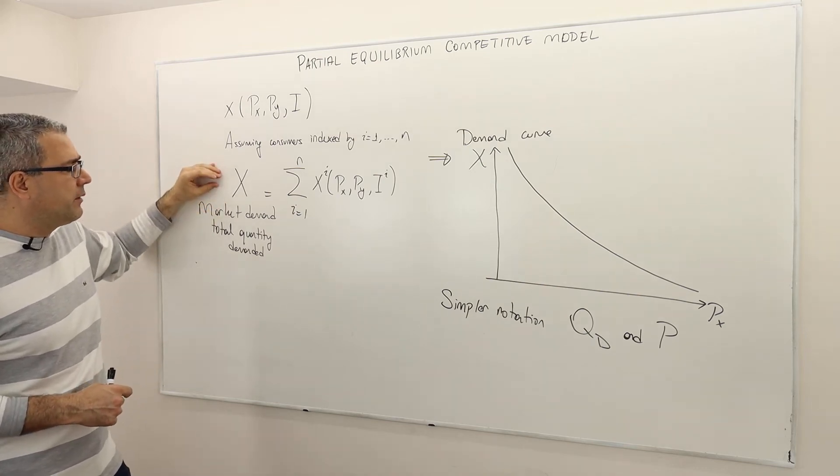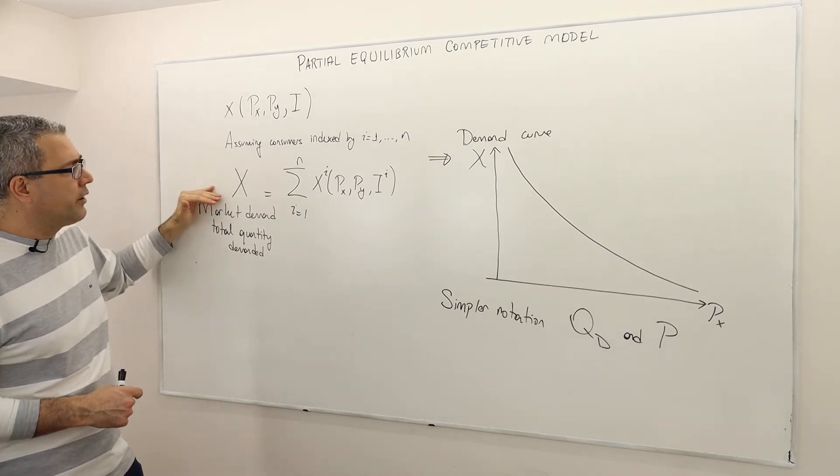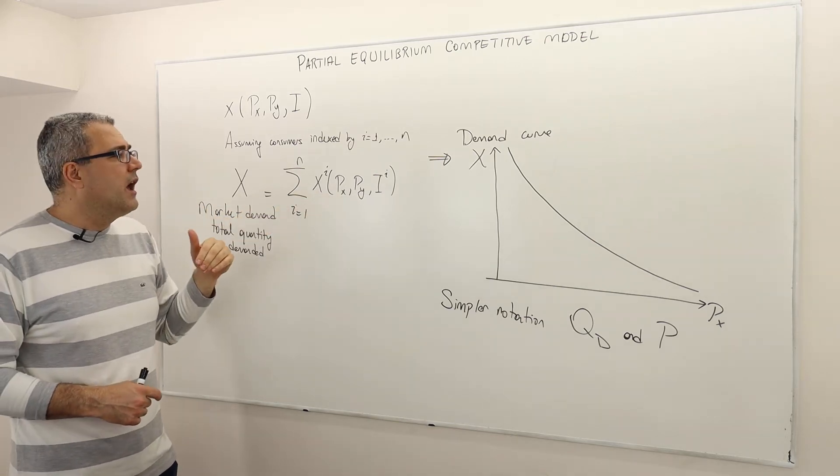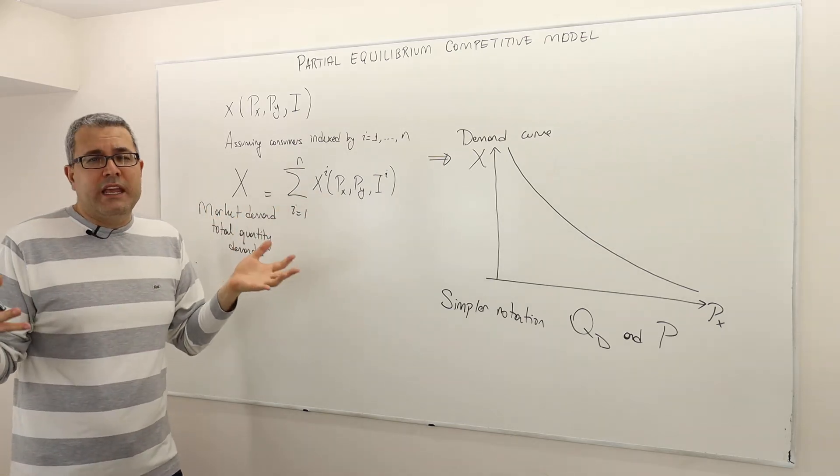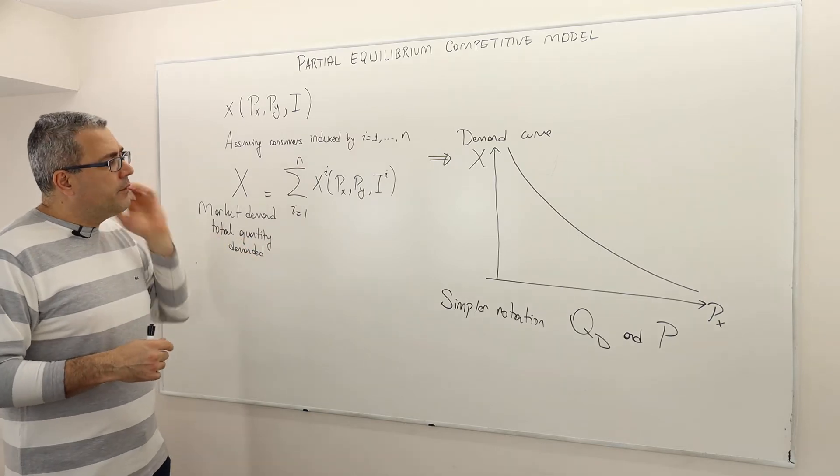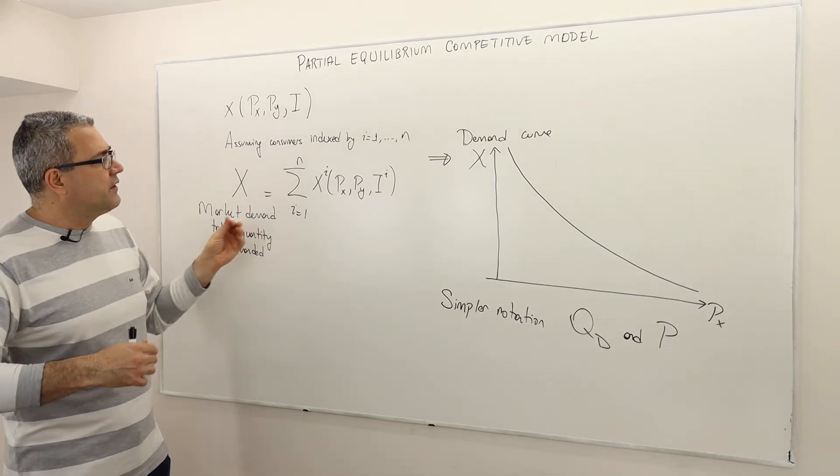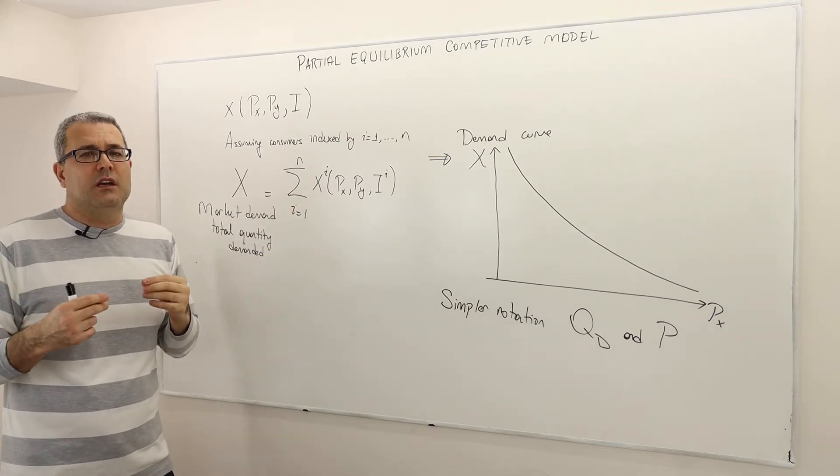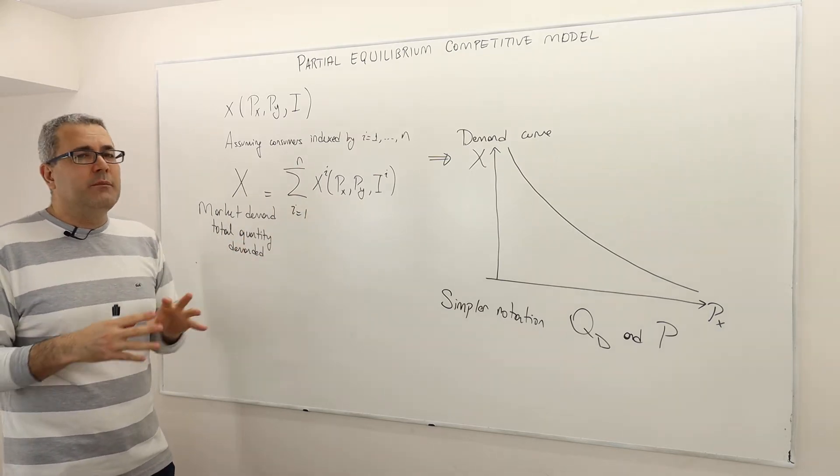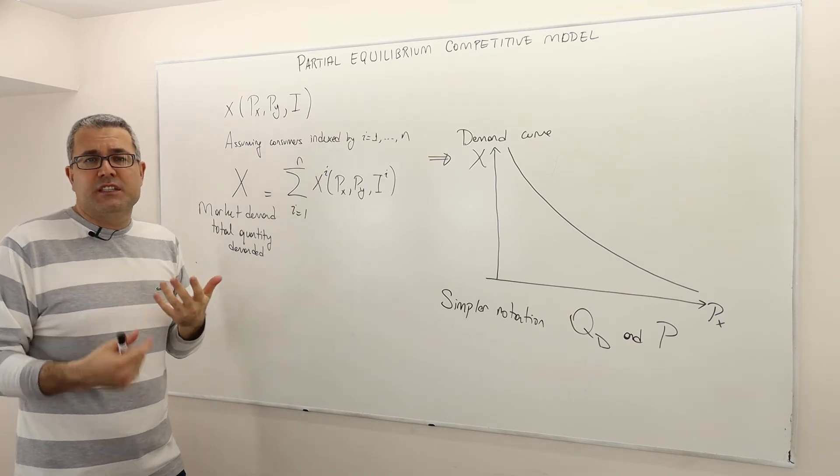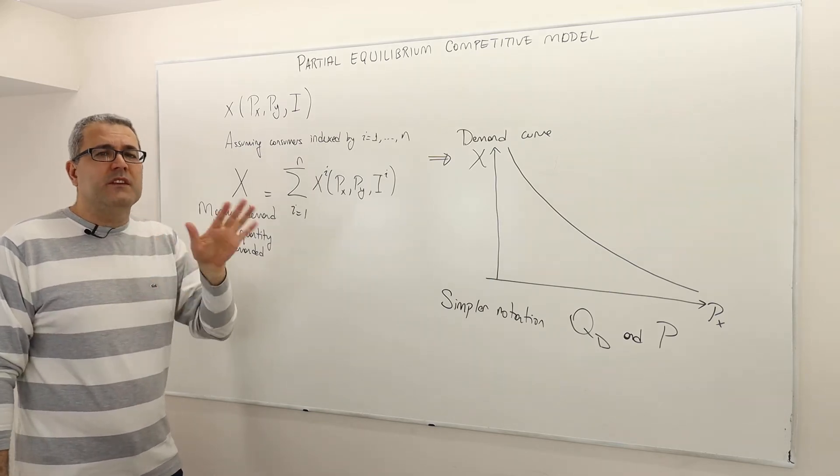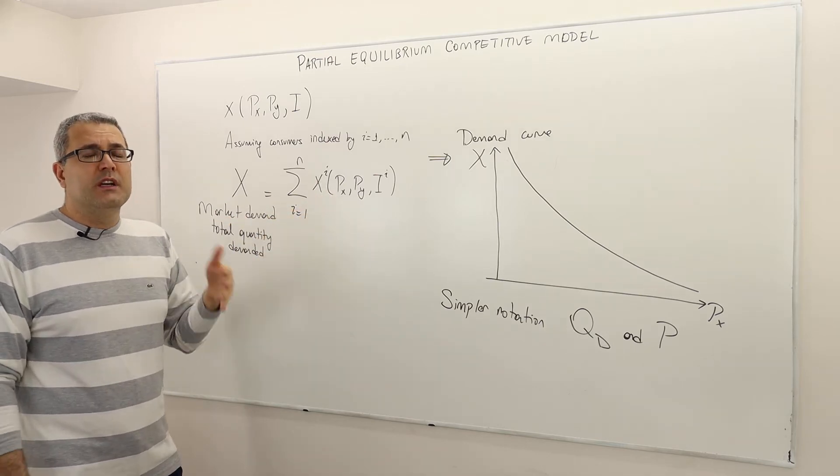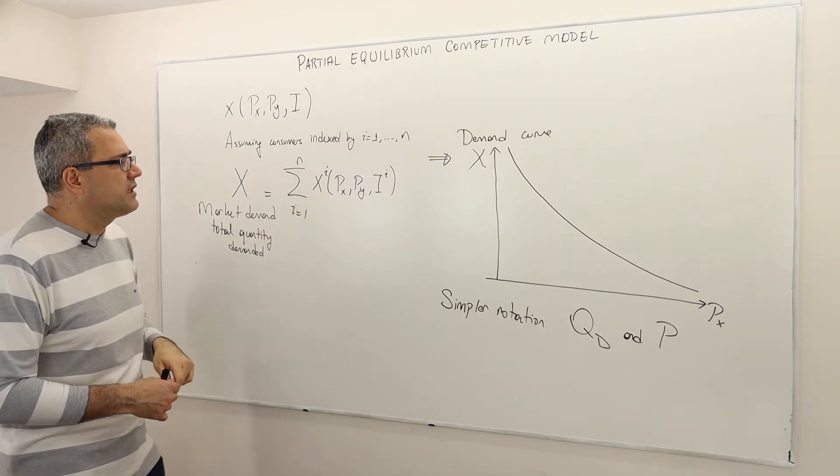This aggregate demand or the market demand for good X also depends on the price of good X, price of good Y, and the total income. Here, one assumption is that each individual is facing the same prices, meaning negotiation is not allowed, or we basically ignore that sort of interaction. So everybody, each consumer, is facing exactly the same price levels.